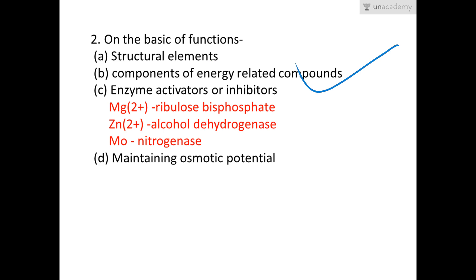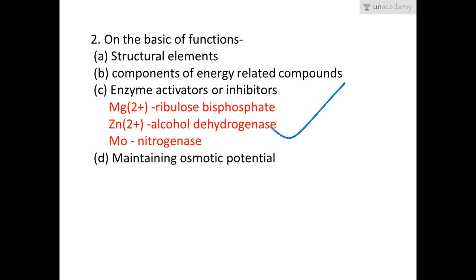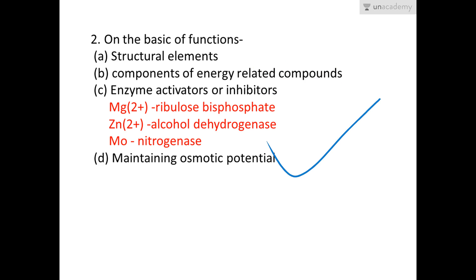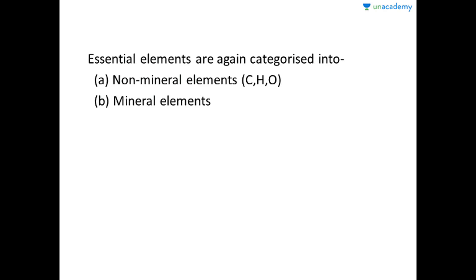For components of energy-related compounds, phosphorus is a component of ATP, and magnesium is a component of chlorophyll which helps in photosynthesis. For enzyme activators, magnesium ion activates ribulose bisphosphate enzyme, zinc ion activates alcohol dehydrogenase, and molybdenum activates nitrogenase and nitrate reductase. For maintaining osmotic potential, potassium, chlorine, sulfate, etc., maintain the osmotic potential of the cell sap, helping in water absorption and cell turgidity.